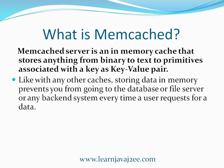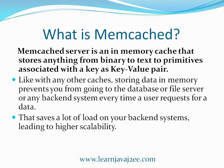Like any other cache, storing data in memory prevents you from going to the database, file servers, or any backend systems every time there is a request for data. If you know that some data is not going to change for some time, it is always better to store that data in a caching mechanism so that you won't be hitting the database again and again and exhausting the resources. Using Memcached or any other caching mechanism reduces lots of load on your backend system, which helps you to increase the scalability of the application.